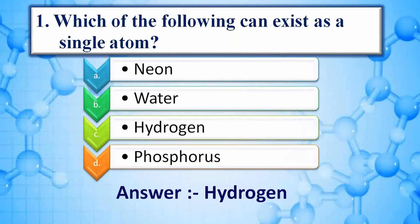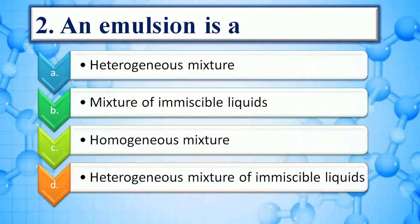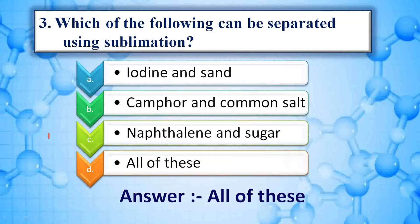Choose the correct option: Which of the following can exist as a single atom — answer is hydrogen. An emulsion is a mixture of immiscible liquids. Which of the following can be separated using sublimation — options: iodine, camphor and common salt, naphthalene and sugar — answer is all of these.